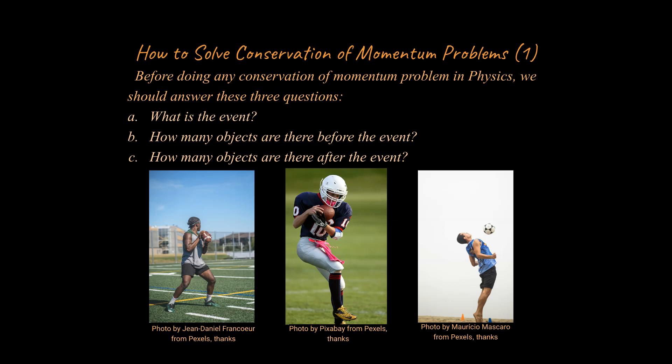How many objects are there before the event? There is one. The player as well as the football count as one object for momentum terms. Then we have the event. That event kind of represents an equal sign in the middle. And then lastly, we have two objects after the event for this person.